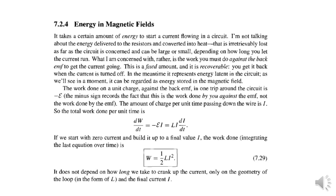So the back EMF — we can do work against the back EMF and store energy in the magnetic field. We have considered that energy stored as the current grows. When the current is turned off, the current decreases and the magnetic field decreases. The back EMF is opposite, and when we increase the magnetic field, we increase the energy stored in the magnetic field.